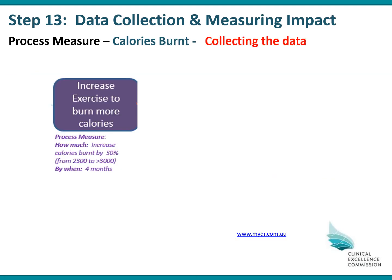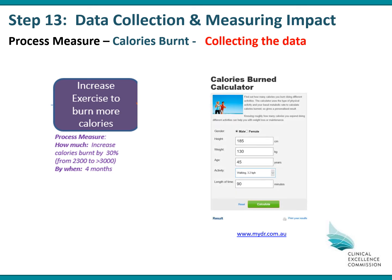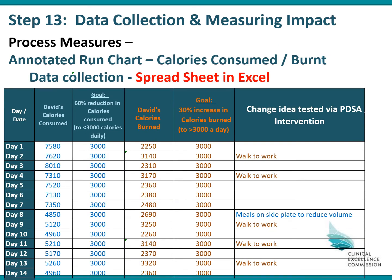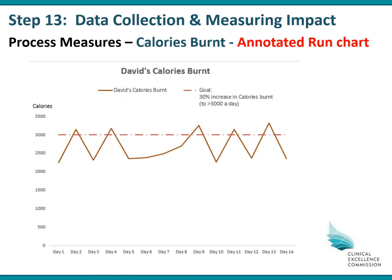The next measure is calories burnt. An easy way to collect this information is through a calories-burnt calculator from the internet. David's daily calories burnt can be put into the same spreadsheet, with the goal of burning more than 3,000 calories a day, and the change idea of walking to work. Graphing this in a run chart, the goal of 3,000 has been achieved on several occasions when he walked to work, with the annotation depicting when he walked and the effect of that. This is a good result.